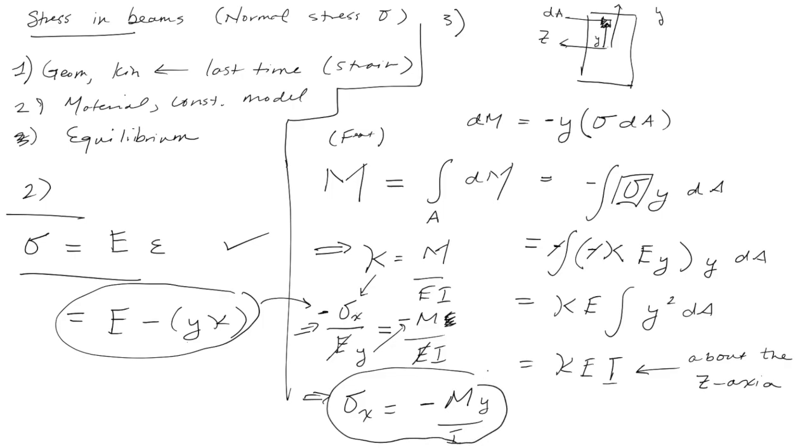This is equal to m over E i. The e's cancel, pull the y up, put the minus sign over there. Sigma x is equal to minus m y over i. So there's our other big equation, there's all of them for the day. This is the big one here that we're going to use the most, it's called the flexure formula. This is the moment of inertia about the z-axis, it's very important.